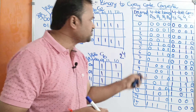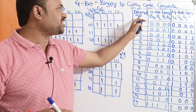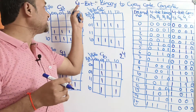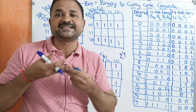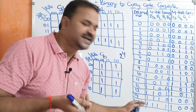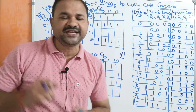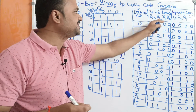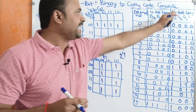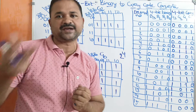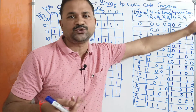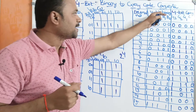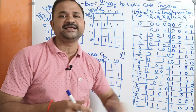Here is the truth table. We have 3 columns. The first column represents the decimal number — we have 16 decimal numbers from 0 to 15, because the number has 4 bits, giving 2 power 4 = 16 combinations. The second column represents the 4-bit binary number: B3, B2, B1, and B0. The third column represents the 4-bit gray code: G3, G2, G1, and G0. So here the input is the binary number, whereas the output is the gray code.